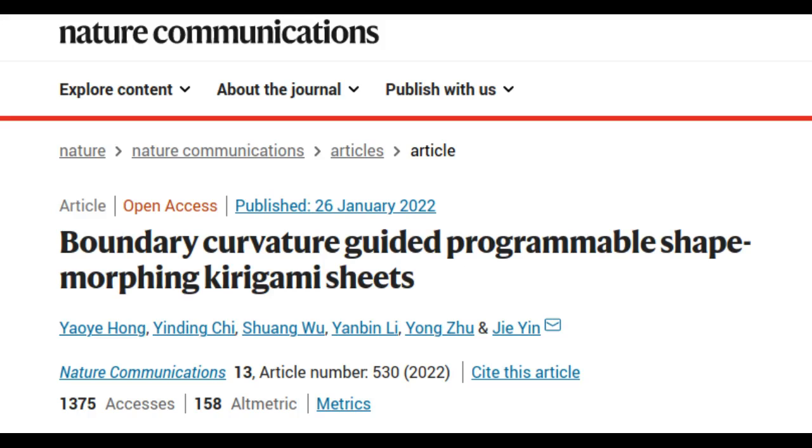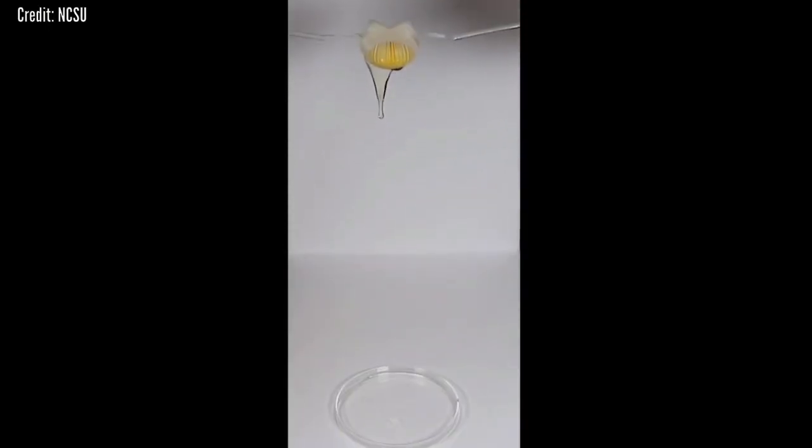Engineering researchers from North Carolina State University have demonstrated a new type of flexible robotic grippers that are able to lift delicate egg yolks without breaking them.